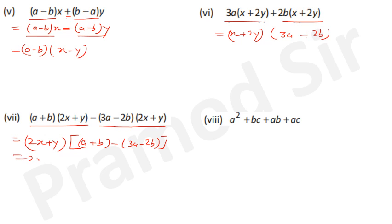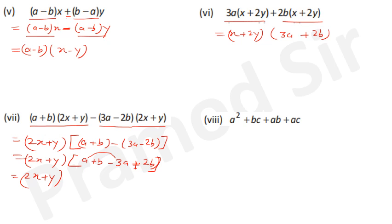Open the bracket: (a+b) − (3a−2b) = a+b−3a+2b. The minus sign changes the inner signs. Solving: a−3a = −2a and b+2b = 3b. So the answer is (2x+y)(−2a+3b).